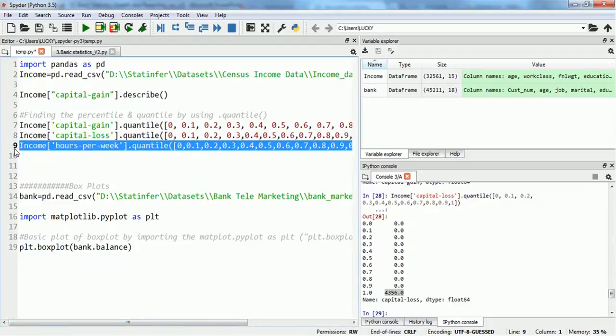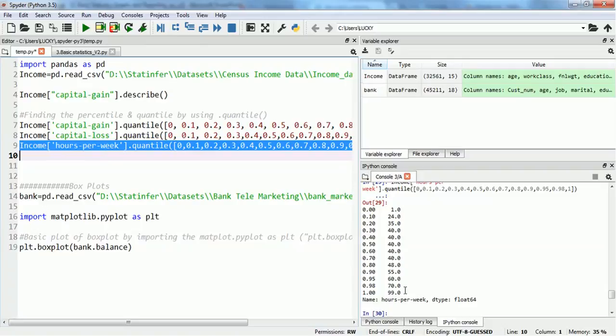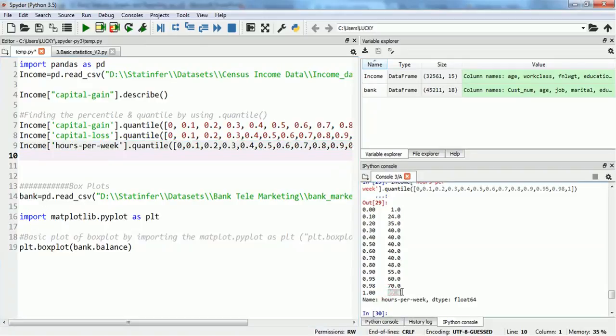We can also use it on hours_per_week, another column, and when we use this column we can see that there are some people who are working 99 hours per week, but there is a regular distribution of numbers. Zero percentage people are working below zero, 10 percentage people are working for 24 hours per week, 50 percent people are working at 40 hours per week. So from 30th percentile to 70th percentile we can see that there is a majority of people, around 50 percent, working around 40 hours a week. This is how we can interpret the data using quantile distribution.